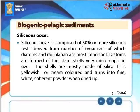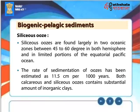Siliceous ooze is composed of 30% or more siliceous tests derived from a number of organisms, of which diatoms and radiolarians are most important. Diatoms are formed of plant shells very microscopic in size, mostly made of silica; they are yellowish or cream-colored and turn into fine, white, coherent powder when dried. Siliceous oozes are found largely in two oceanic zones between 45° to 60° in both hemispheres and in limited portions of the equatorial Pacific Ocean. The rate of sedimentation of oozes has been estimated as 11.5 cm per 1,000 years. Both calcareous and siliceous oozes contain substantial amounts of inorganic clays.